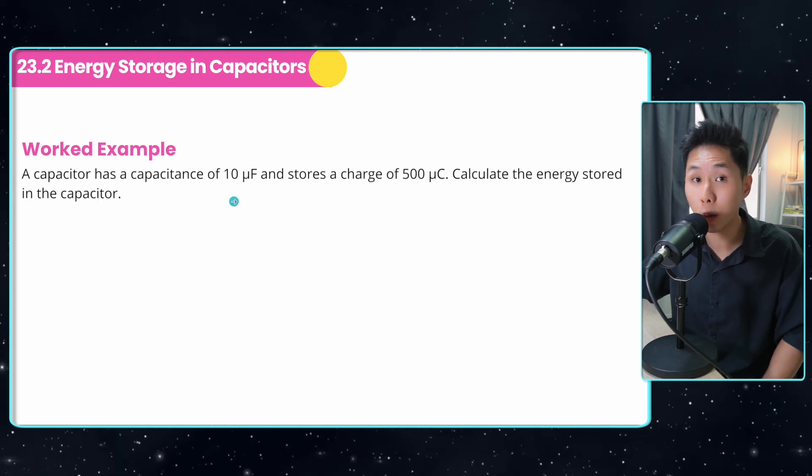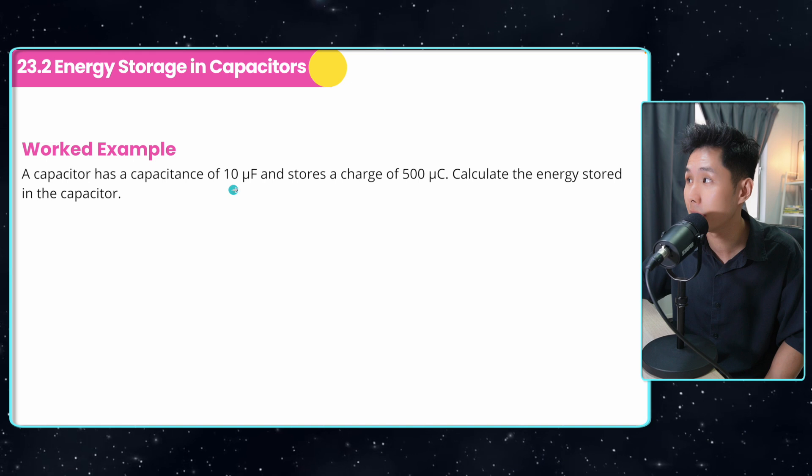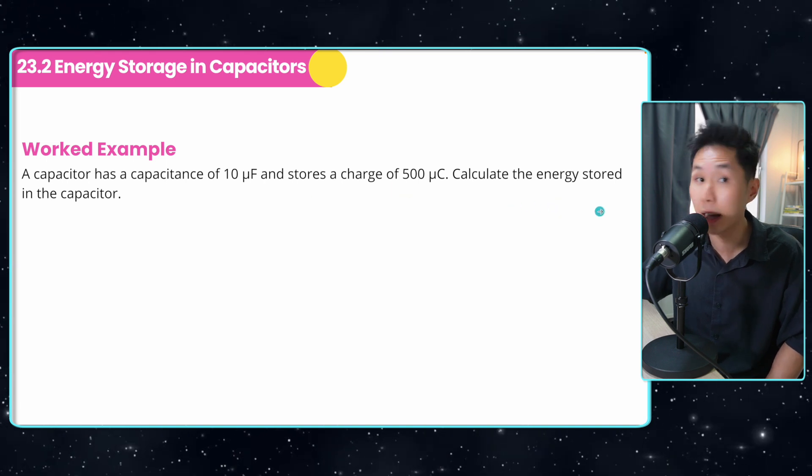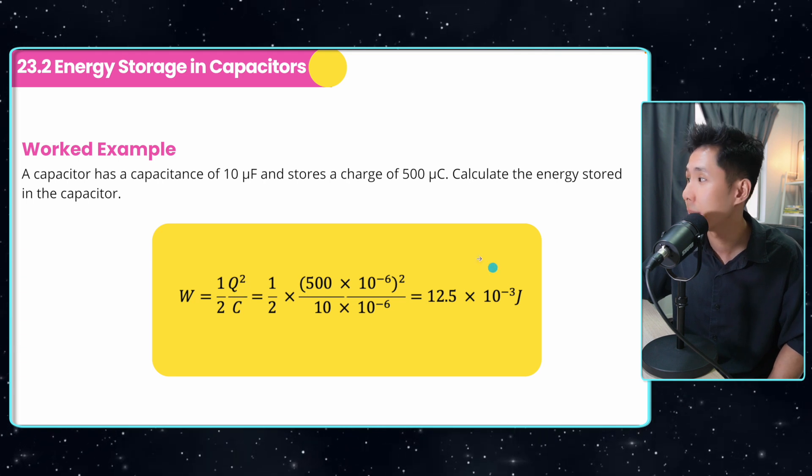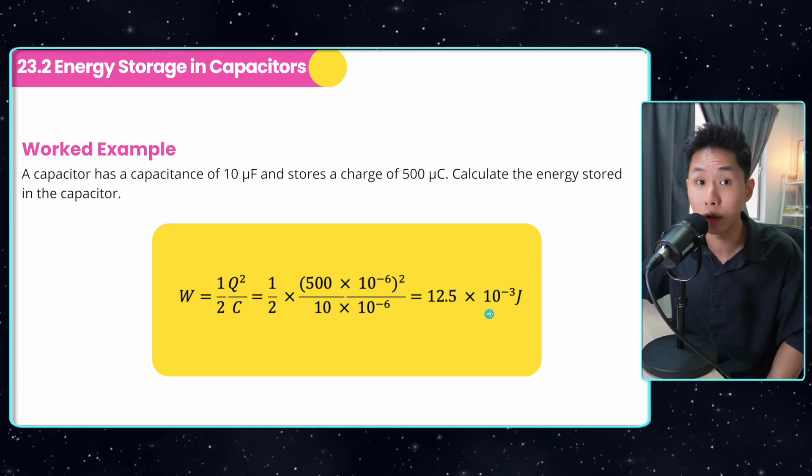Well, another example, now we have a different quantity given, capacitance is given, charge is given, calculate the energy stored. So we can use another formula that has Q and C in the equation, multiply them together and get the energy in Joules.